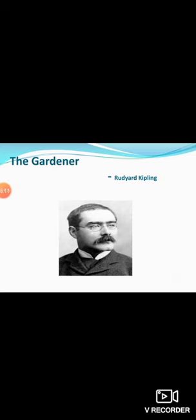'The Gardener' is mainly the story of Helen Turrell, a woman of British parentage who lived in Bombay, India, at a time when India was under British colonial rule. In about the end of the 19th century, she conceives and becomes pregnant without getting married. Therefore she travels to the south of France, Marseille, where she gives birth to a son in secret and takes him to live in England.